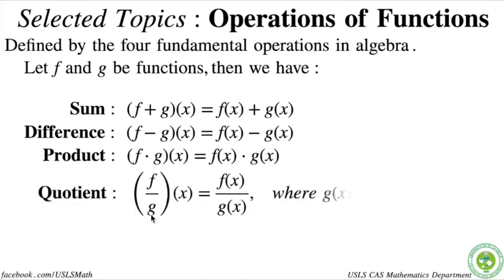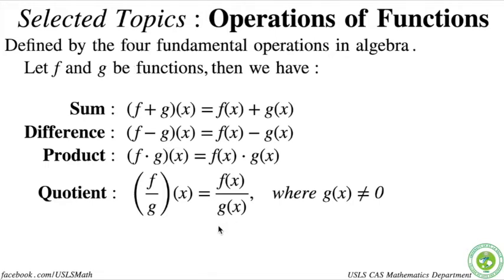Lastly, but not least, we have the quotient. So f over g of x is just equal to the individual functions f of x divided by g of x. It should be noted that g of x should not be equal to 0. We don't want any denominator of 0 — it's really not valid to have that.